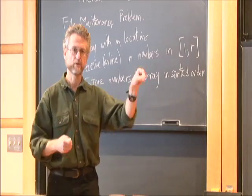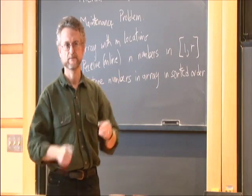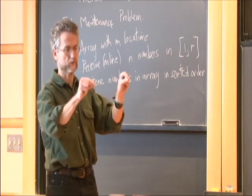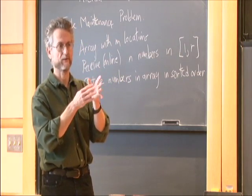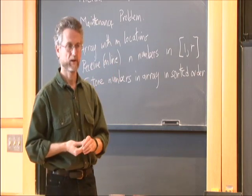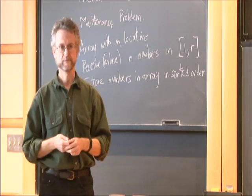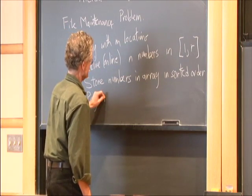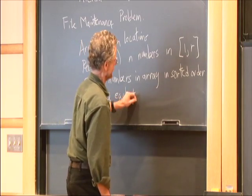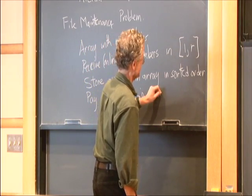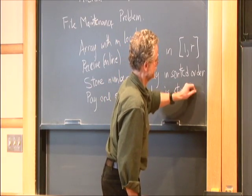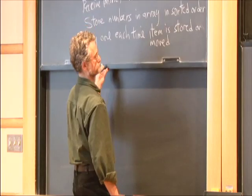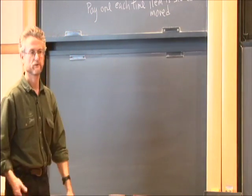As the numbers come in, you place them in the array. You can leave gaps. As you get the numbers you leave gaps, but the gaps fill in, and eventually things get so crowded you have to start moving stuff around. You pay every time you move something — you pay one each time an item is stored or moved. You want to minimize the total cost.